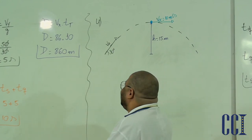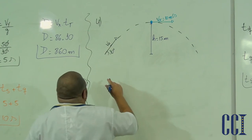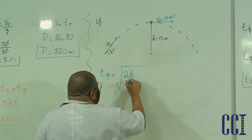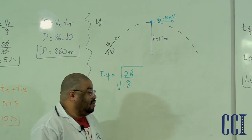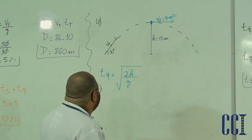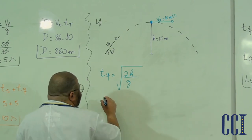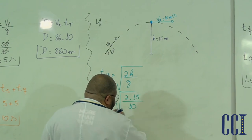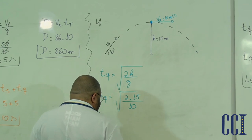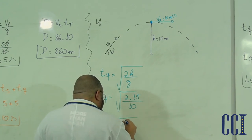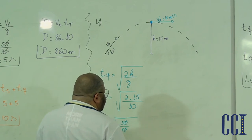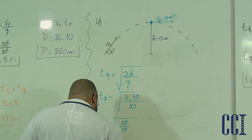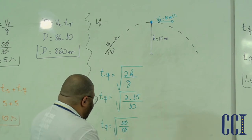Para saber a velocidade inicial, posso descobrir primeiro o tempo de queda usando: TQ = raiz de (2H / g) = raiz de (2 × 15 / 10) = raiz de (30 / 10) = raiz de 3. Simplificando: tempo de queda = raiz de 3 ≈ 1,73 segundos.